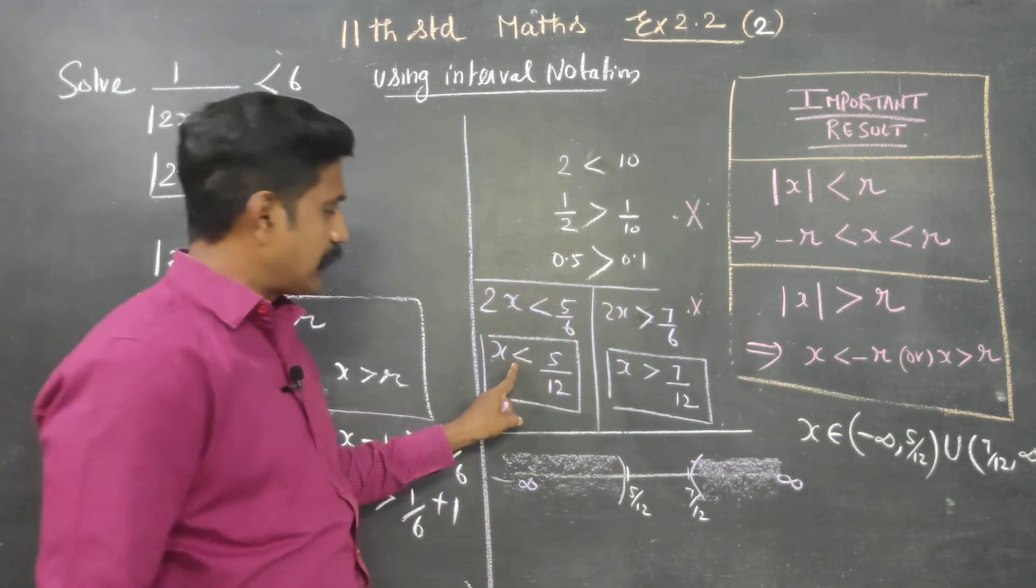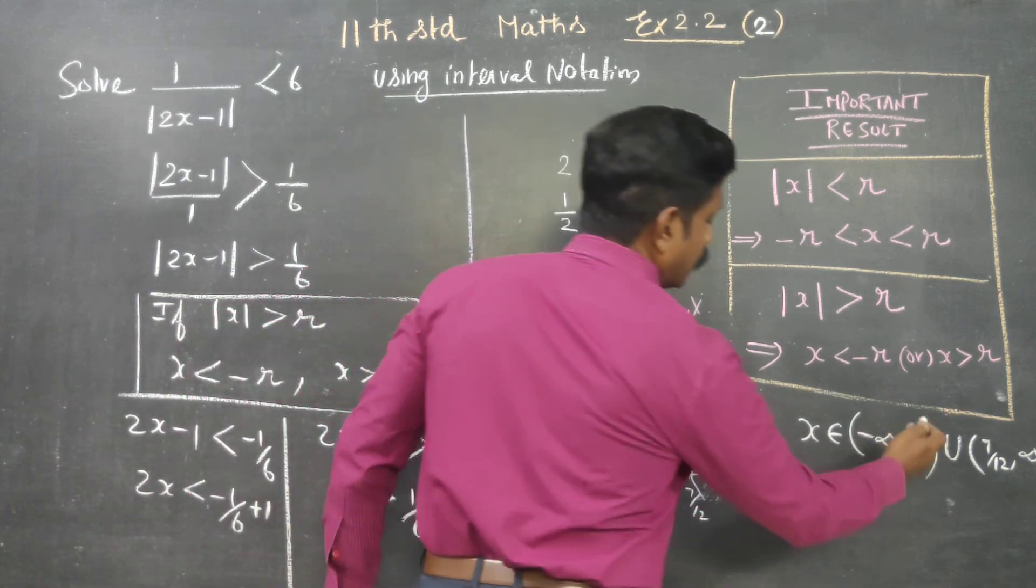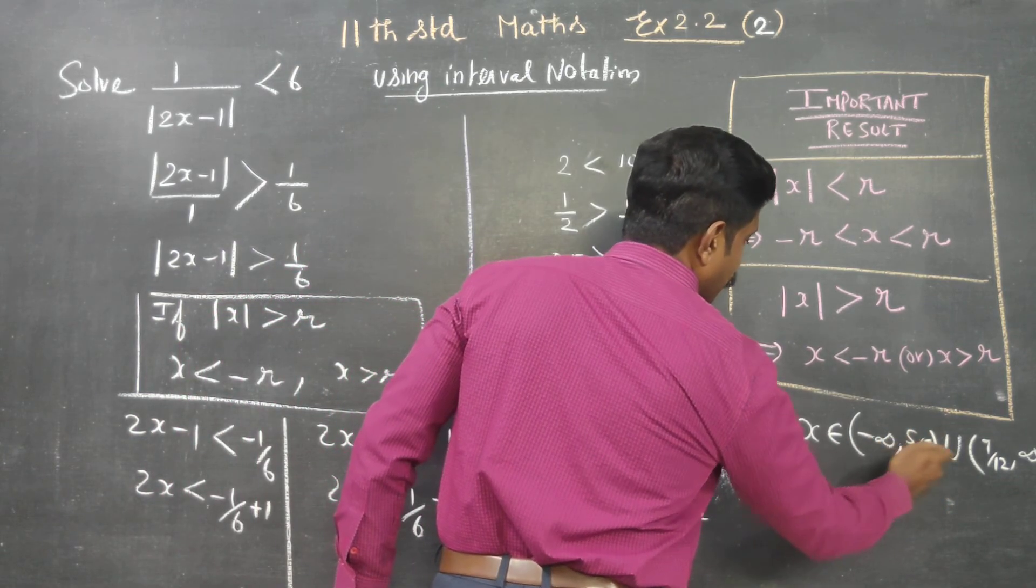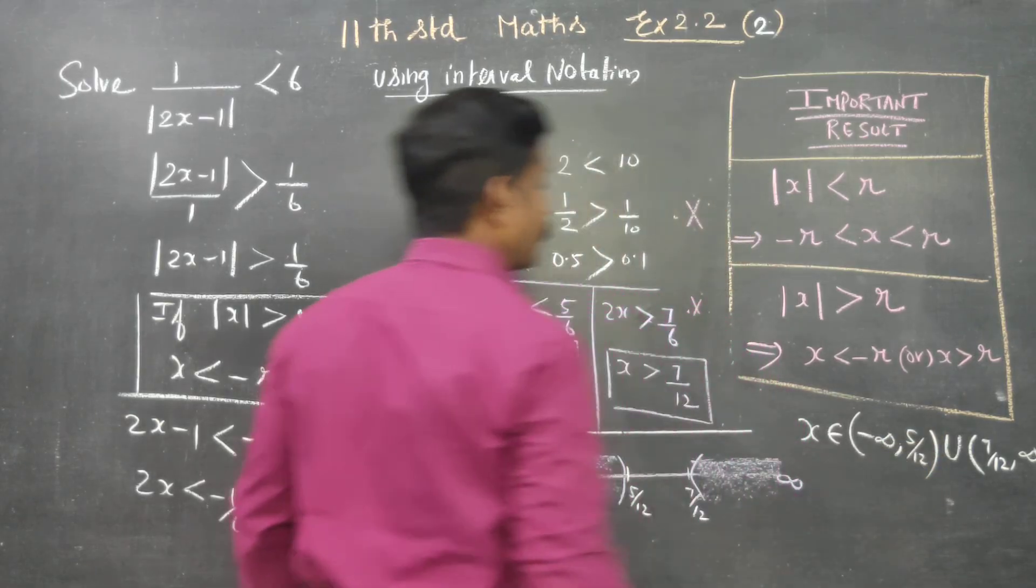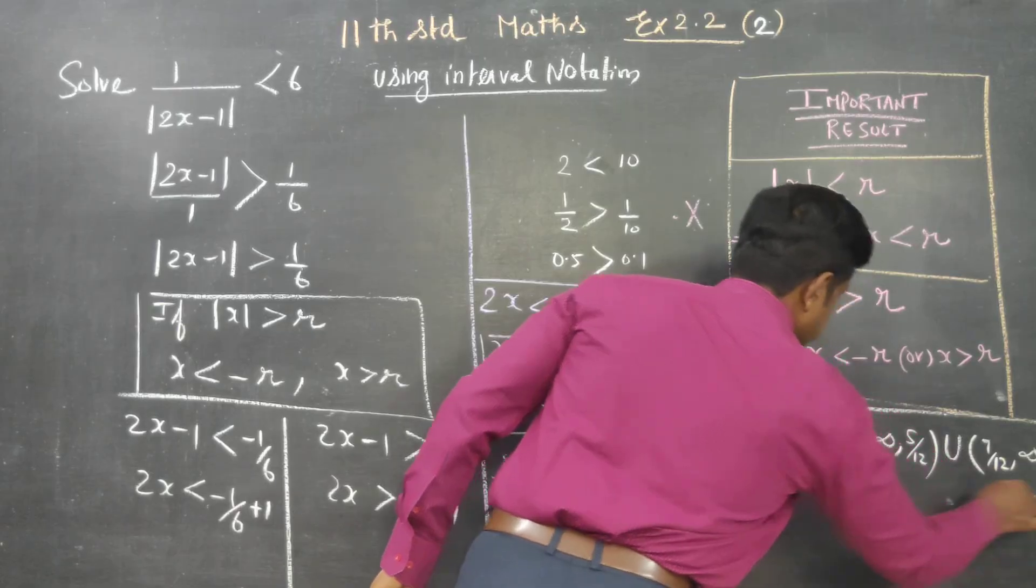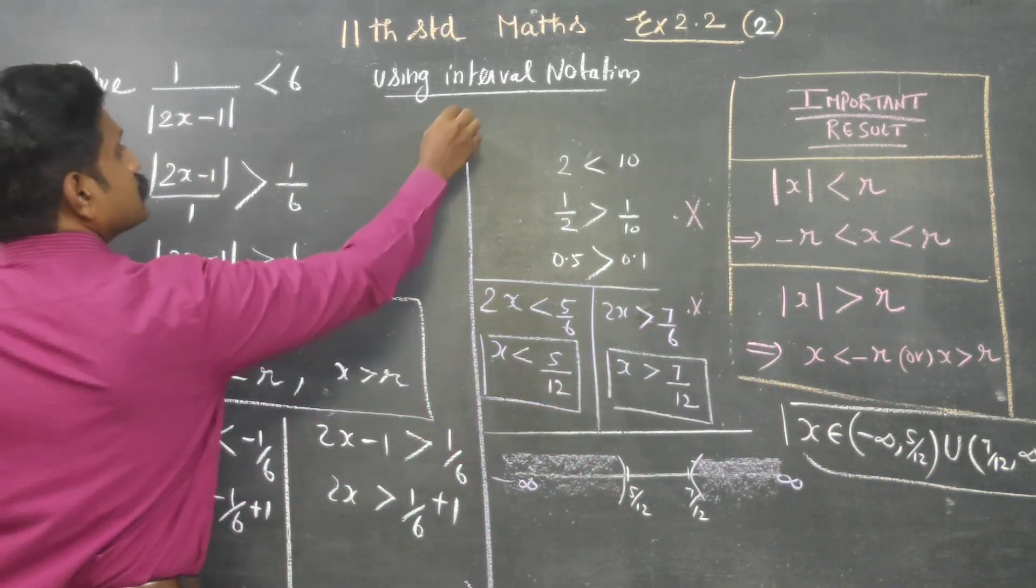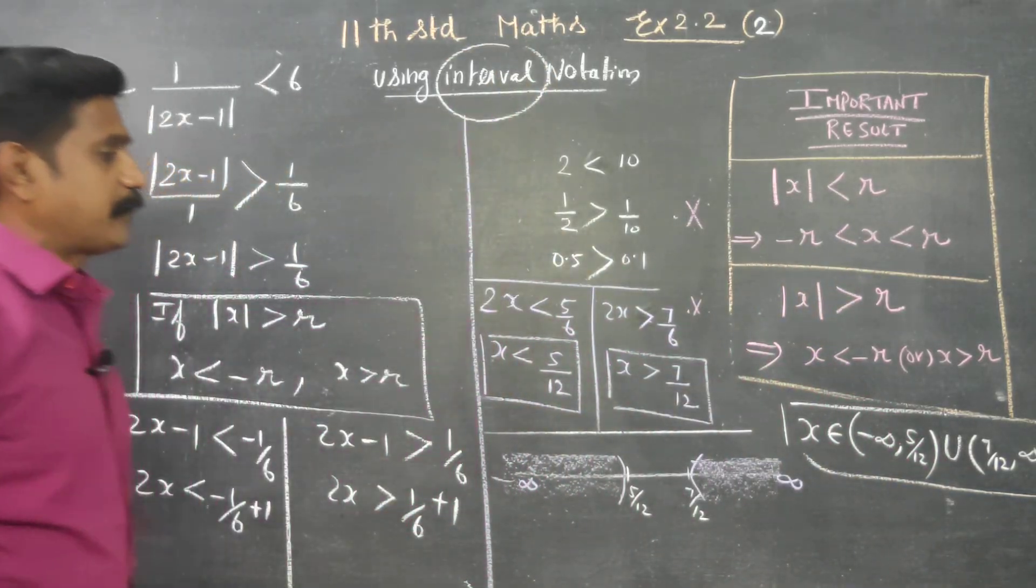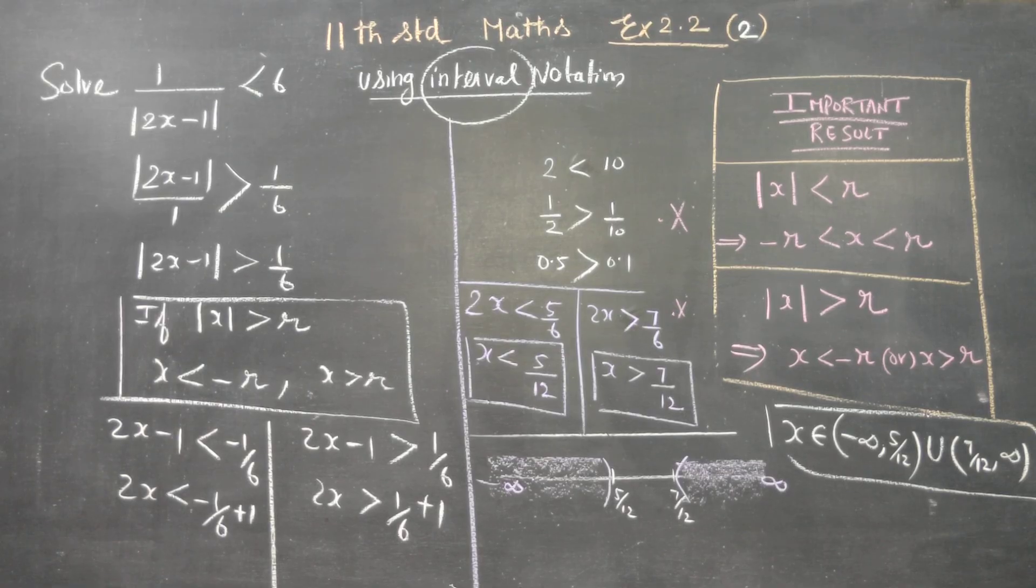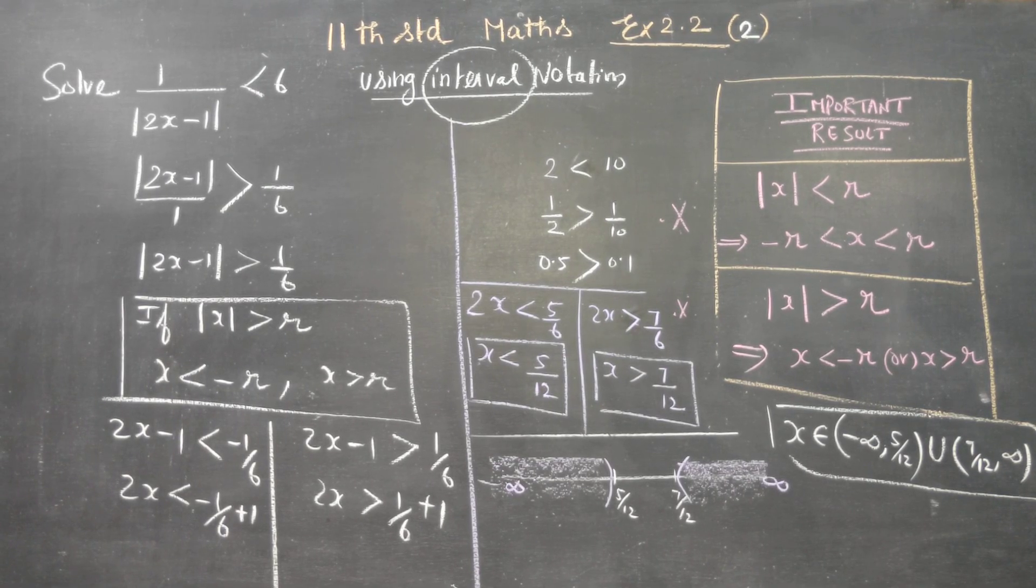The answer is from minus infinity to 5 by 12. Between that does not include 5 by 12, and does not include 7 by 12. Using interval notation, therefore my answer will be minus infinity to 5 by 12 union 7 by 12 to plus infinity. Thank you.